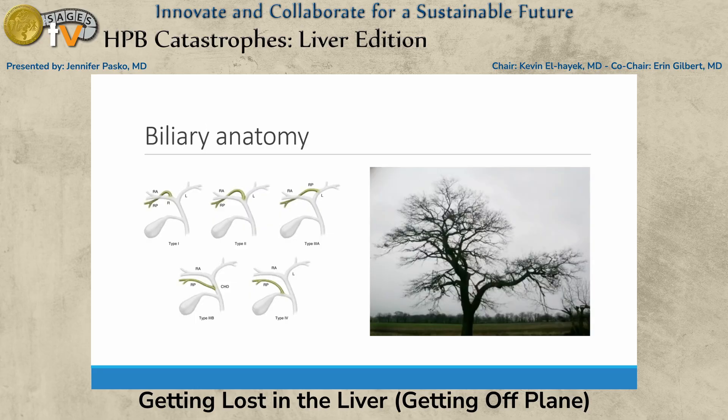Biliary anatomy honestly scares me, so I get the MRI every time. Type 3a biliary anatomy occurs about 20% of the time — you're going to get the right posterior duct coming off the left. If you're doing a left hepatectomy, you could injure that right posterior duct.